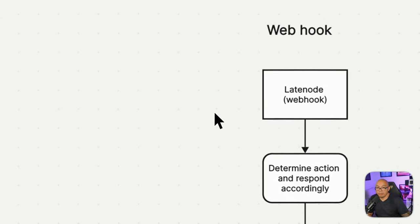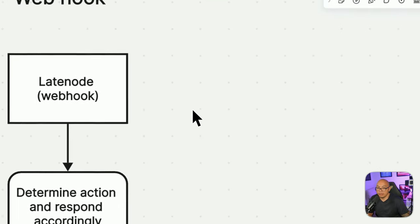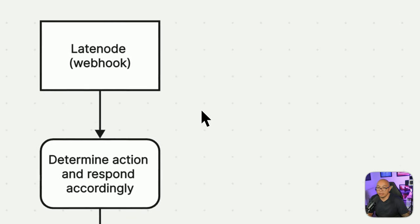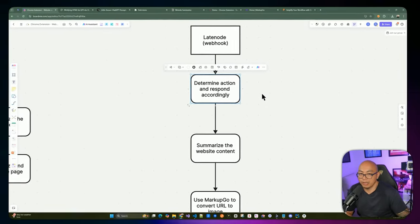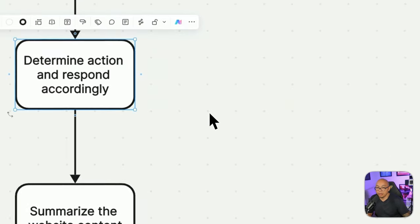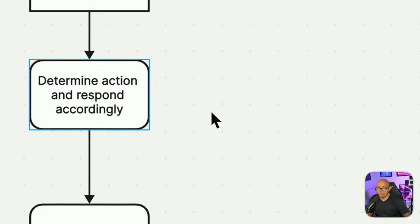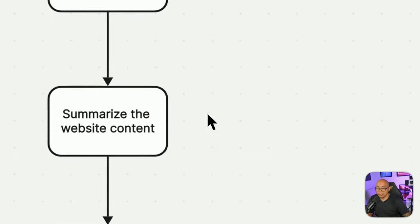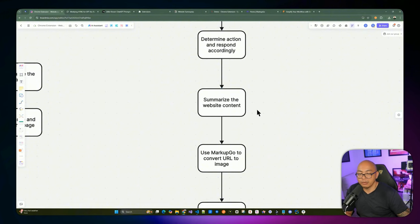Now let's move on to building the Latenode webhook. The trigger is a webhook that receives the action, URL, API key, and other information from the Chrome extension. We determine which action was taken — summarize page or summarize and save — and we always summarize the website content regardless of action since we need to respond back to the Chrome extension.